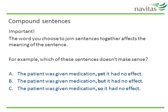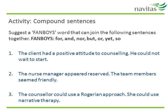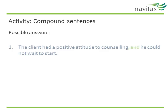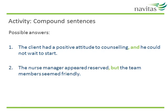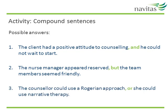Keep in mind that you can't just use any FANBOYS linking word to join simple sentences — the linking word has to show the correct relationship between the information. Take a look at the example on the slide and work out which one doesn't make sense. You may want to pause the video here to give yourself time to read. As you can probably see, sentence C does not make sense. Here are some pairs of sentences that can be linked with a FANBOYS linking word — pause the video now to do the activity. Some possible answers: 'The client had a positive attitude to counselling and he could not wait to start.' 'The nurse manager appeared reserved but the team members seemed friendly.' 'The counsellor could use a Rogerian approach or she could use narrative therapy.'